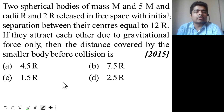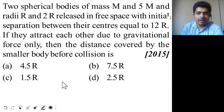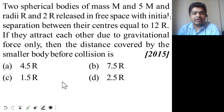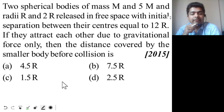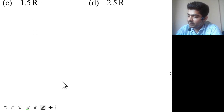Look at this question: two spherical bodies of mass m and 5m, and radii r and 2r, are released in free space with initial separation between their centers equal to 12r. If they attract each other due to gravitational force only, then the distance covered by the smaller body before collision is — four options are given, try to mark your answer.